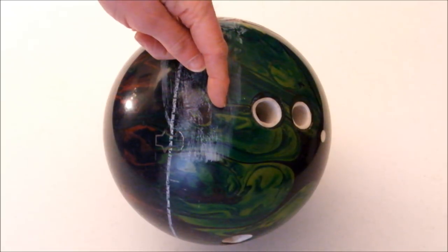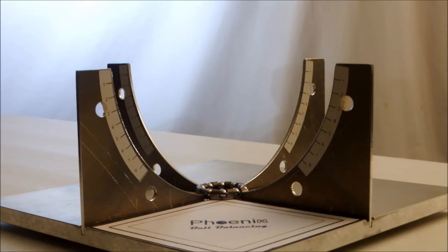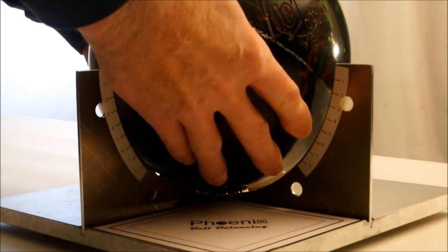After you have located the natural track, place the ball in the cradle and position it in such a way that the track reads the same on all four wings.